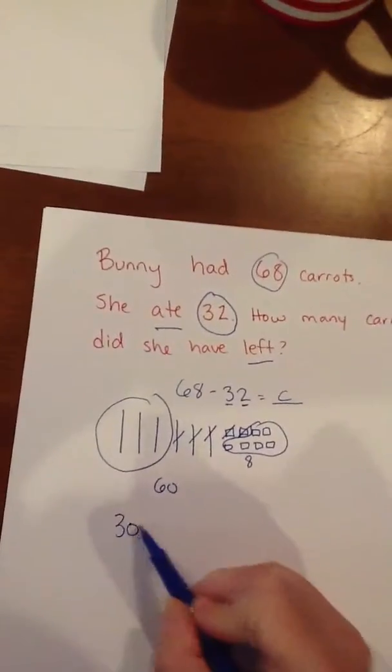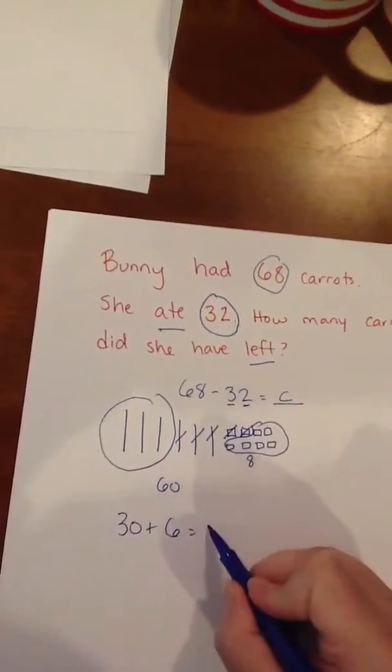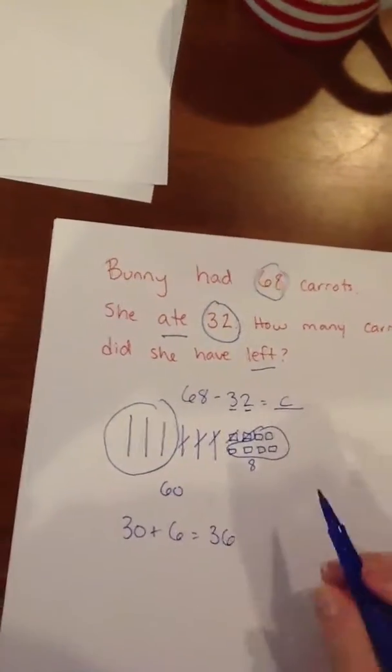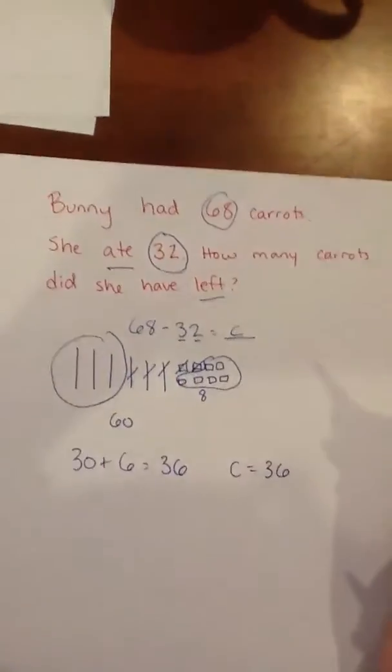We have 30 plus 1, 2, 3, 4, 5, 6 equals 36. So C equals 36. That's how many carrots she had left.